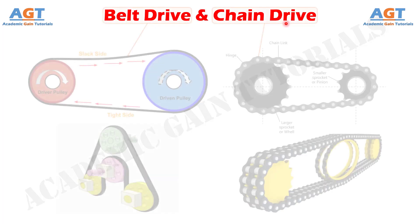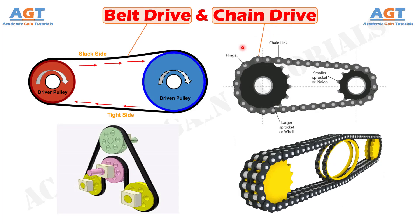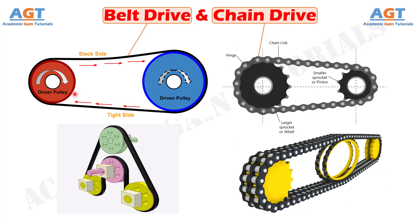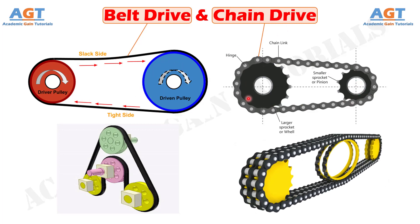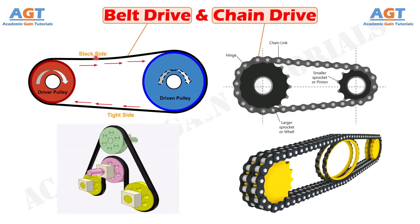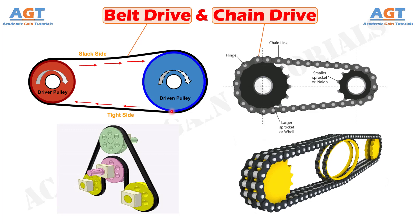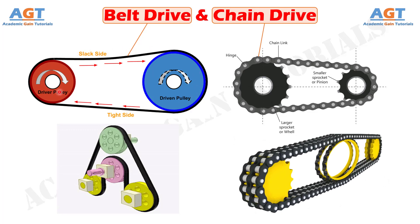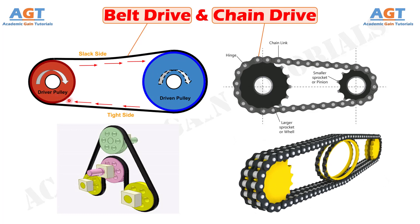Both belt drive and chain drive are mechanical drives. Thus they utilize various mechanical elements which must be in physical contact for transmitting power. Belt drive is one type of mechanical drive where motion and power are transferred from one shaft to another by means of friction between belt and pulleys mounted on each shaft.